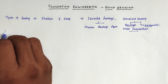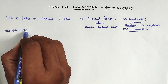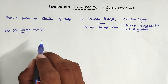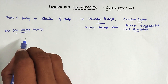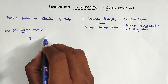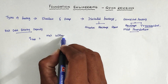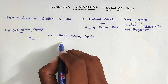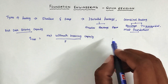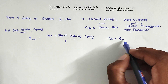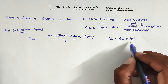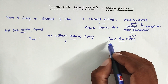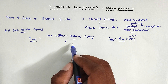Next is net safe bearing capacity, which is very important. It is the amount of load the soil can withstand — the capability of the soil. The formula is: Q_net safe bearing capacity = net ultimate bearing capacity divided by factor of safety F. The net ultimate bearing capacity Q_NU = Q_U minus (gamma × D_F), where gamma is the unit weight of soil and D_F is the depth of foundation.